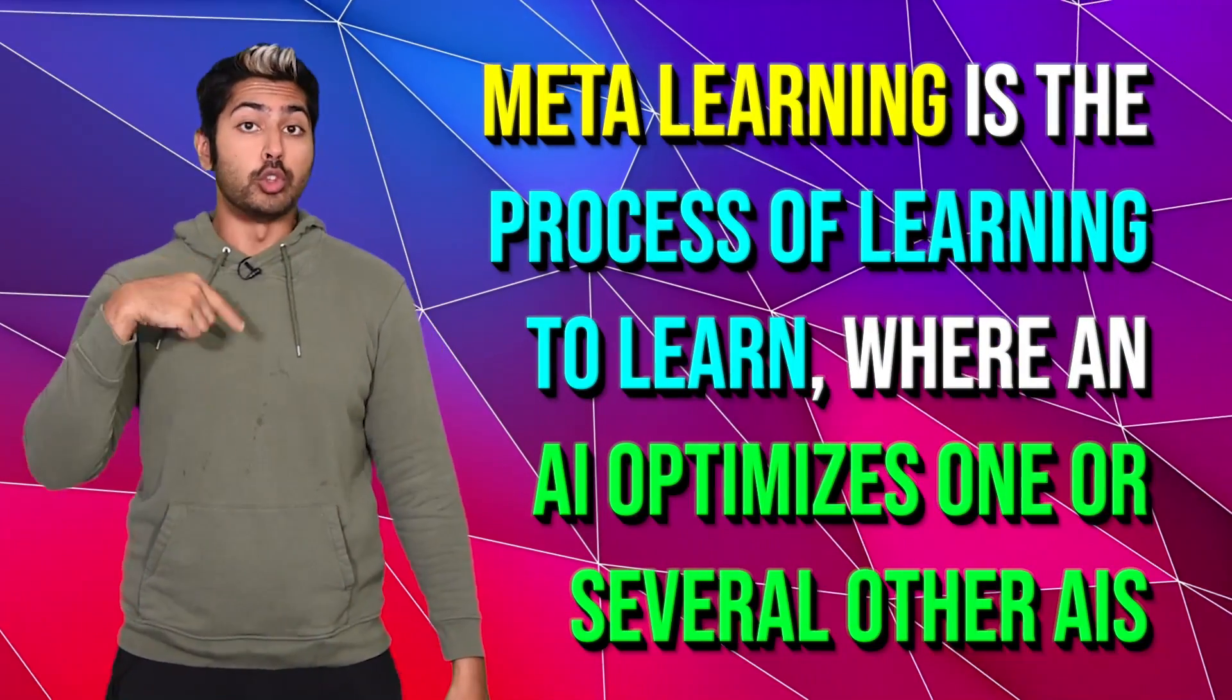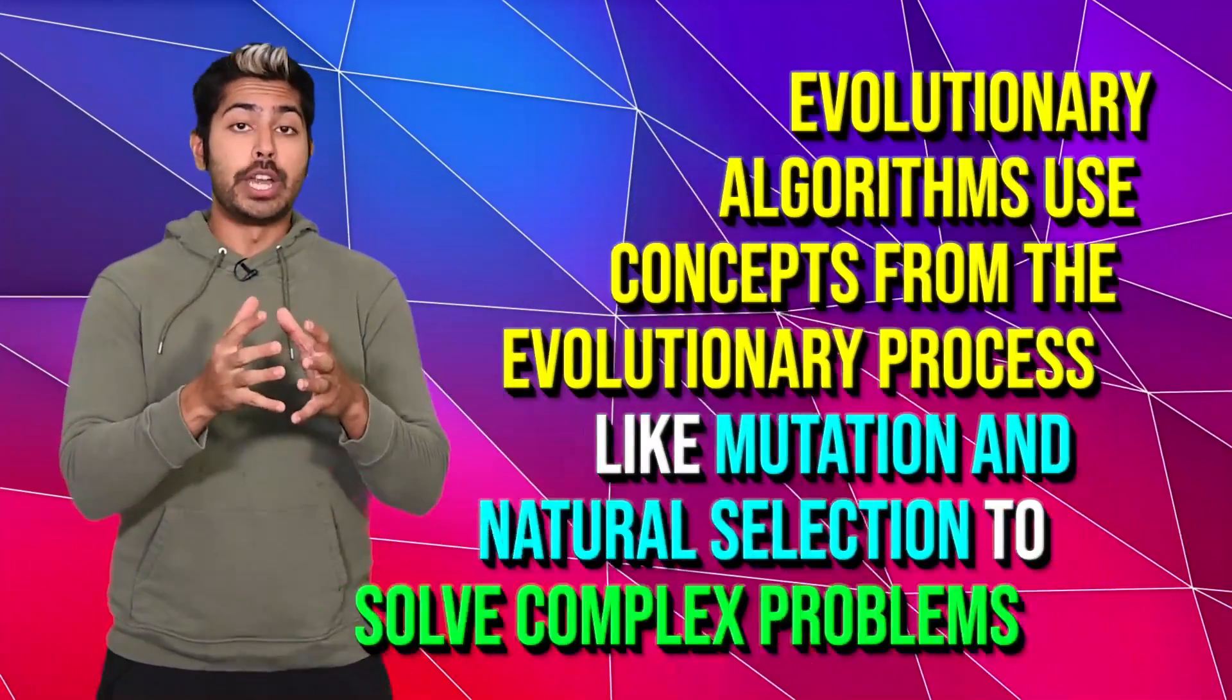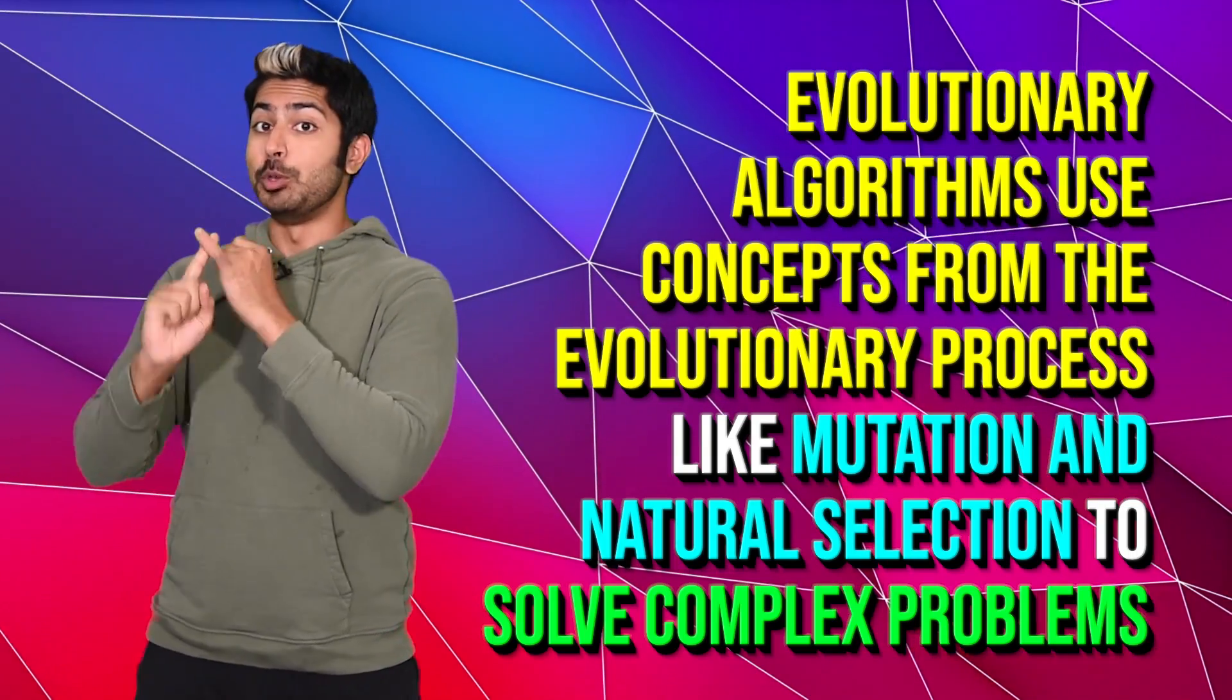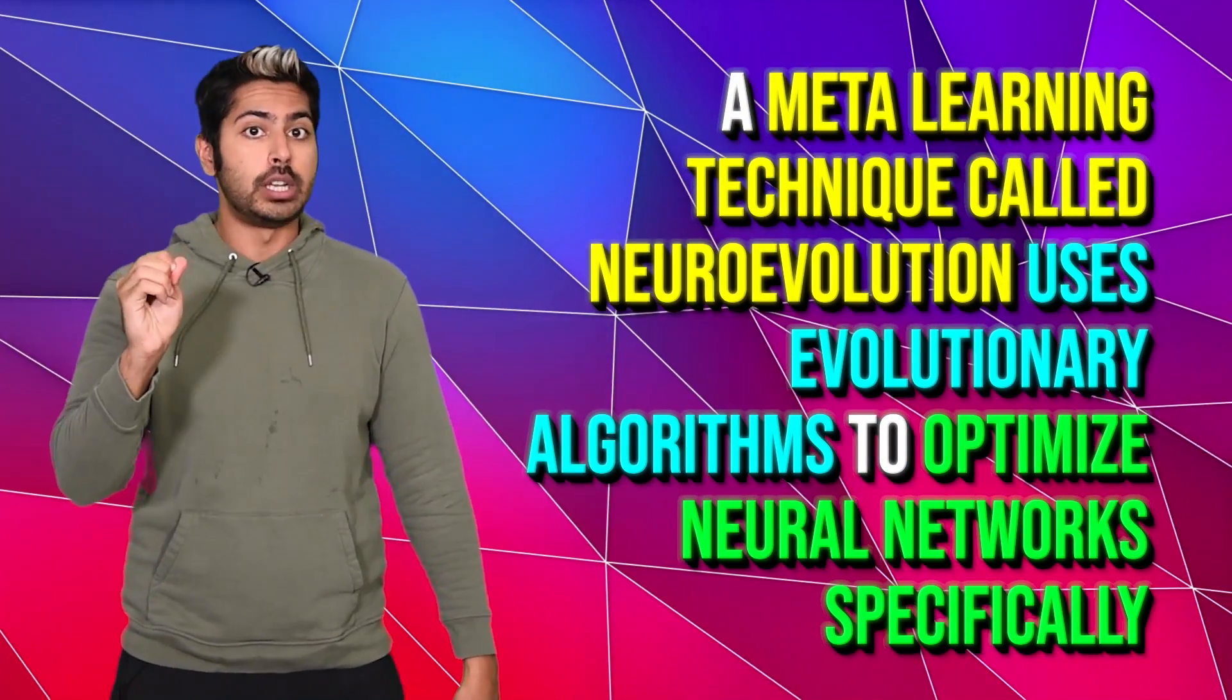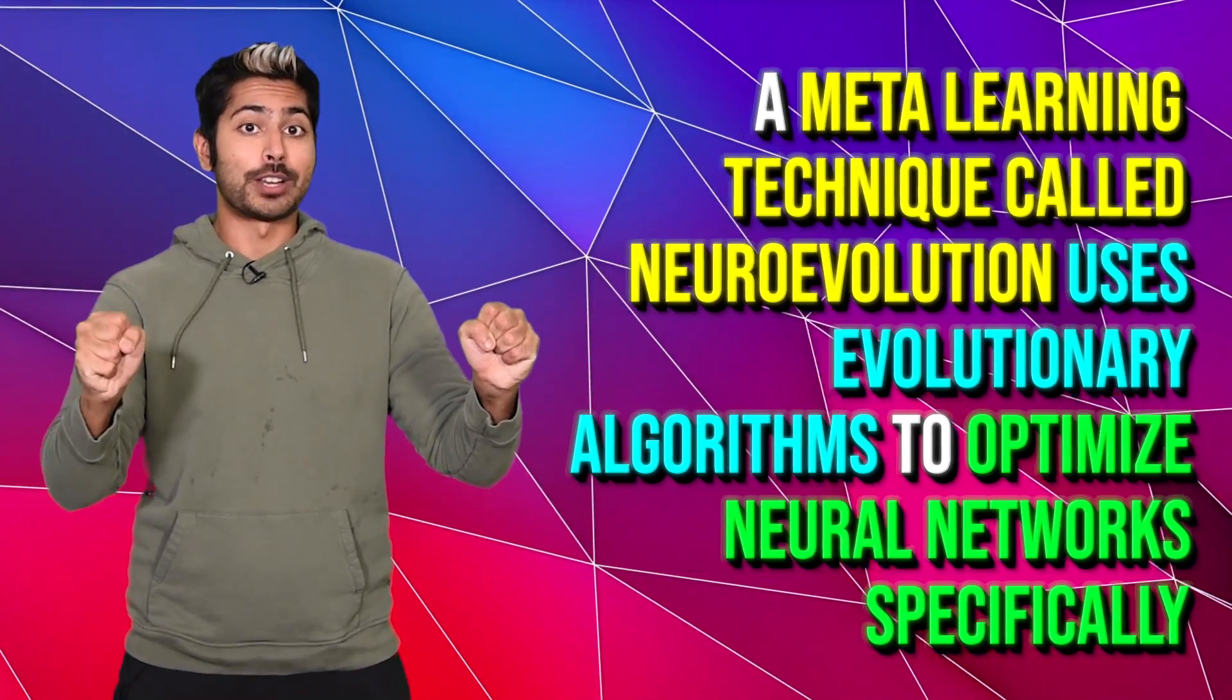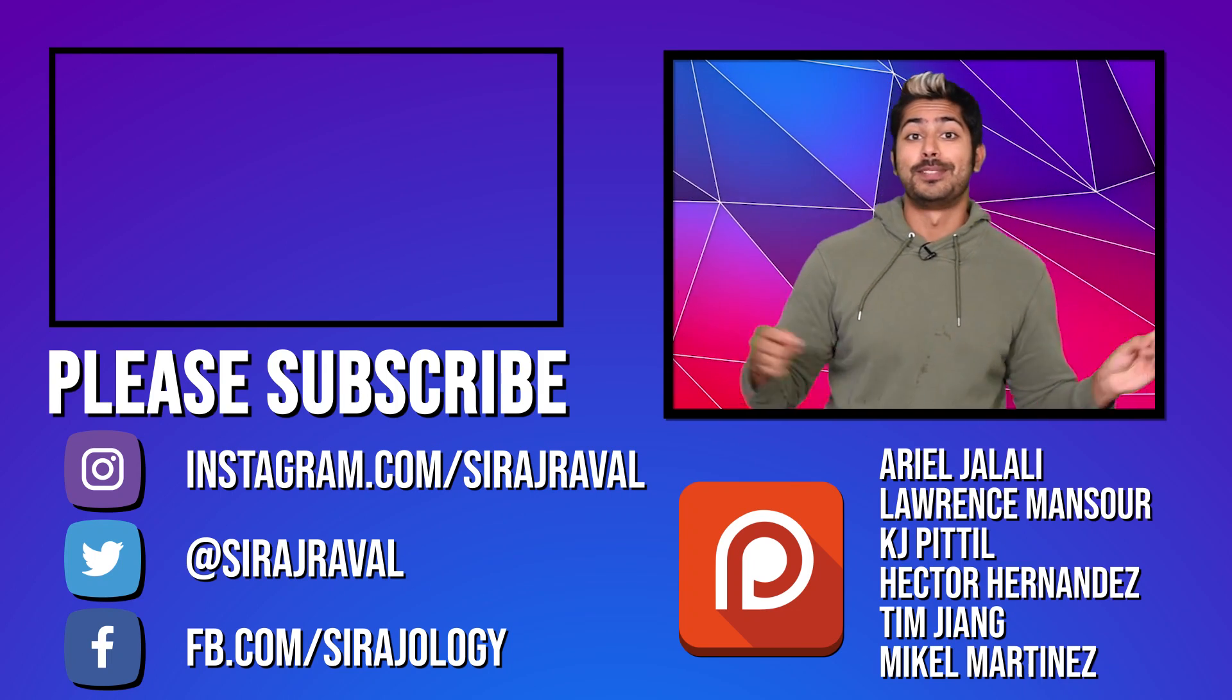So what have we learned here? Meta-learning is the process of learning to learn, where an AI optimizes one or several other AIs. Evolutionary algorithms use concepts from the evolutionary process, like mutation and natural selection, to solve complex problems. And a meta-learning technique called neuroevolution uses evolutionary algorithms to optimize neural networks specifically. Please subscribe for more programming videos, and for now, I've got to find a gradient, so thanks for watching.